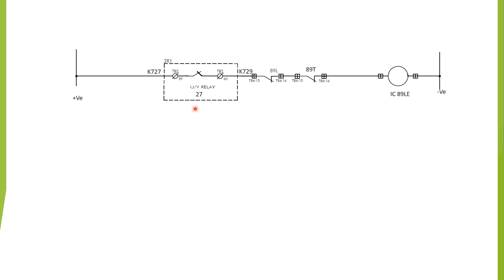The three conditions are: first, the CVT shall have no voltage from either the local end or the remote end — under this condition the under-voltage relay 27 will not operate, the contact remains in NC position, and voltage will pass through. Second, 89L (the line isolator) shall be open. Third, 89T (the bus transfer isolator) shall be open for this feeder. Only then will the interlocking coil be energized and we can operate the line earthing switch electrically.